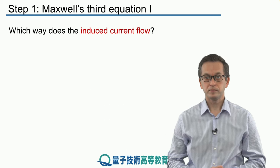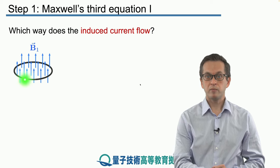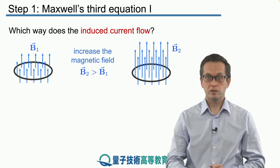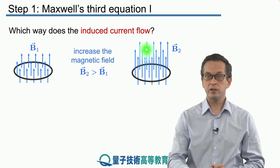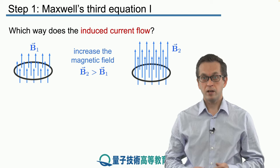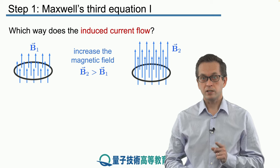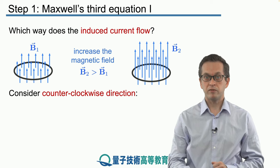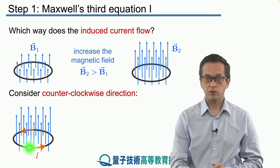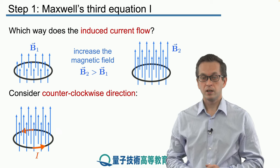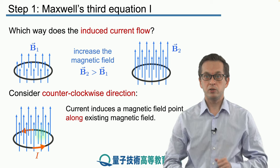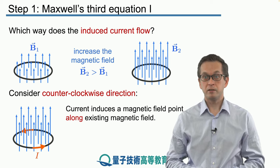For example, we've got our loop with magnetic field B1 passing through. We increase the magnitude until it reaches B2, which is larger than B1. Due to this change, we generate a current. Now the question is, in what direction is the current flowing in the loop? Let's consider what happens if it's flowing counterclockwise. This current flowing in the loop also induces a magnetic field, and the direction can be determined by the right hand rule.